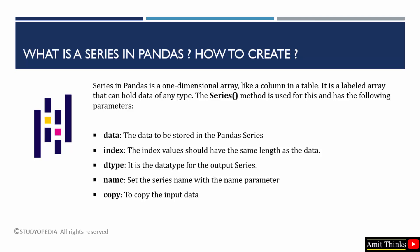To create a Series in pandas, use the Series method. Here are the parameters: data, index, dtype, name, and copy. The data parameter is used to store the data in the pandas Series. The index parameter lets you set your own indexes. Use dtype to add a specific data type, name to add the name of the Series, and copy to copy the input data.